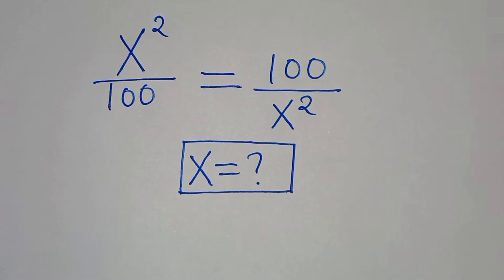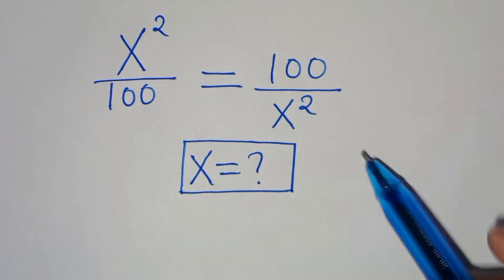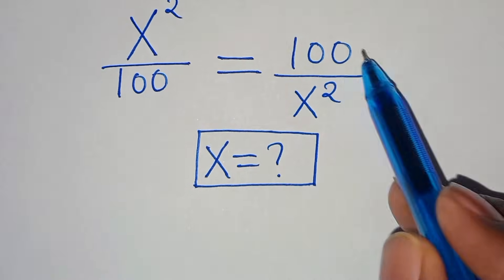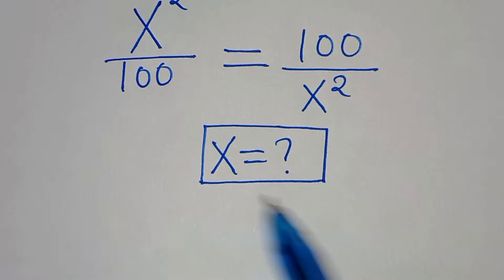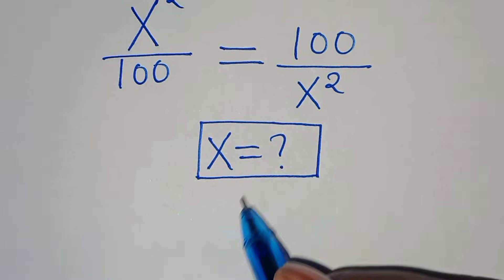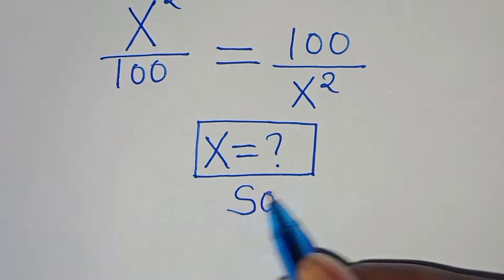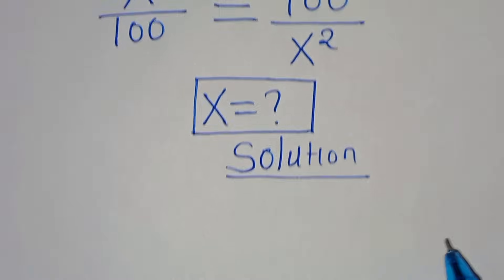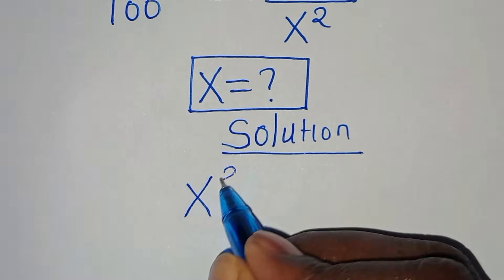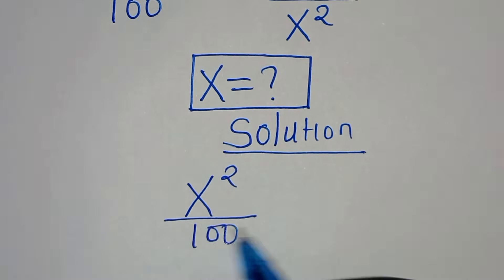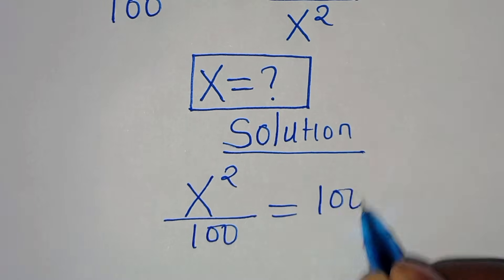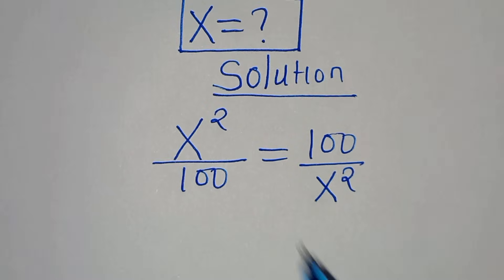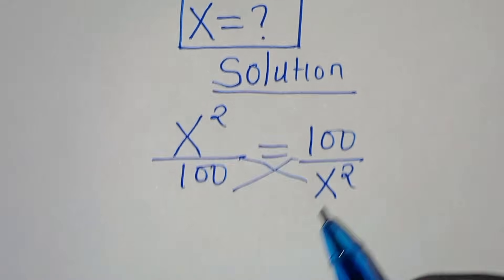Hello everyone, you are welcome to solve this nice algebra problem which is x squared over 100, this is equal to 100 over x squared. So what are the values of x? Let's provide a solution. From here we have x to the power of 2 divided by 100, this is equal to 100 over x to the power of 2.